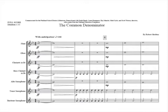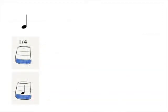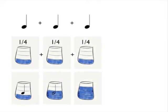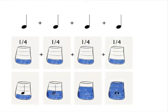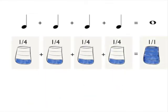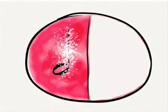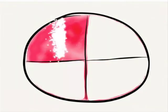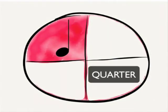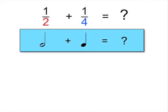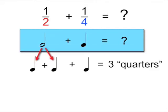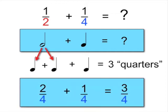Even in the opening measures of The Common Denominator, there are so many opportunities for teaching and reinforcing fractions. For instance, measures can be compared to other containers such as a glass of liquid or a tasty pie. The addition of various fractions can be demonstrated musically using the principle of common denominator. A half note is two quarters; therefore, a half note plus a quarter is three quarters.